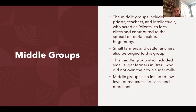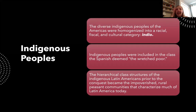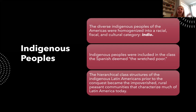Middle groups also included low-level bureaucrats, artisans, and merchants living in cities. The diverse cultures and linguistic backgrounds of indigenous peoples were homogenized into a racial, fiscal, and cultural category under the Spanish known as indio. These complicated hierarchical indigenous societies — with nobles, commoners, and slaves — were compressed under Spanish rule into the lower castes, creating the impoverished rural peasant communities we see across Latin America today.